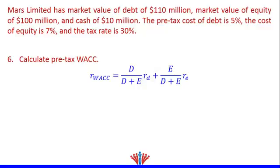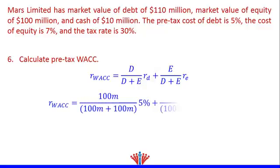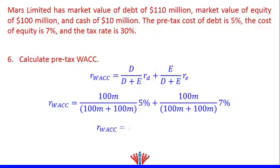So, pre-tax WACC is $100 million divided by ($100 million + $100 million), multiplied by 5%, plus $100 million divided by ($100 million + $100 million), multiplied by 7%, which equals 2.5% plus 3.5%. This gives us a pre-tax WACC of 6%.